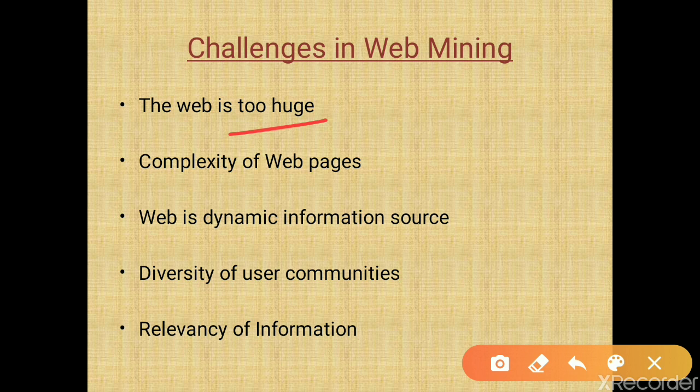Web libraries are not arranged in order, which is a second challenge in web mining. The third challenge is that the web is a dynamic information source, because information on the web is rapidly updated — for example, news, stock market data, and sports information are regularly and rapidly changing. The next challenge is the diversity of user communities: different user communities use the web, making it difficult to manage.